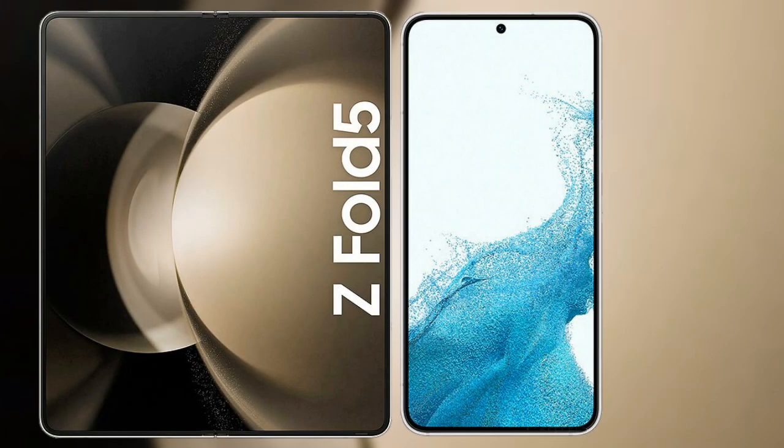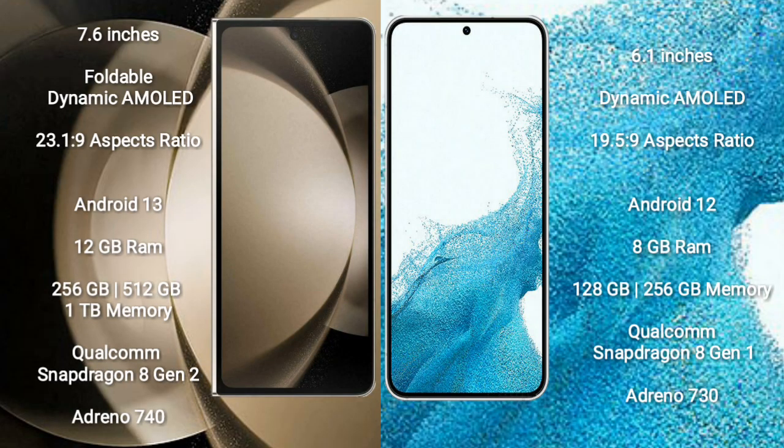I will compare the new Samsung Galaxy Z Fold 5 with Samsung Galaxy S22. The Z Fold 5 comes with a 7.6-inch foldable dynamic AMOLED display and aspect ratio 23.1:9. The Samsung Galaxy S22 comes with a 6.1-inch dynamic AMOLED display and aspect ratio 19.5:9.